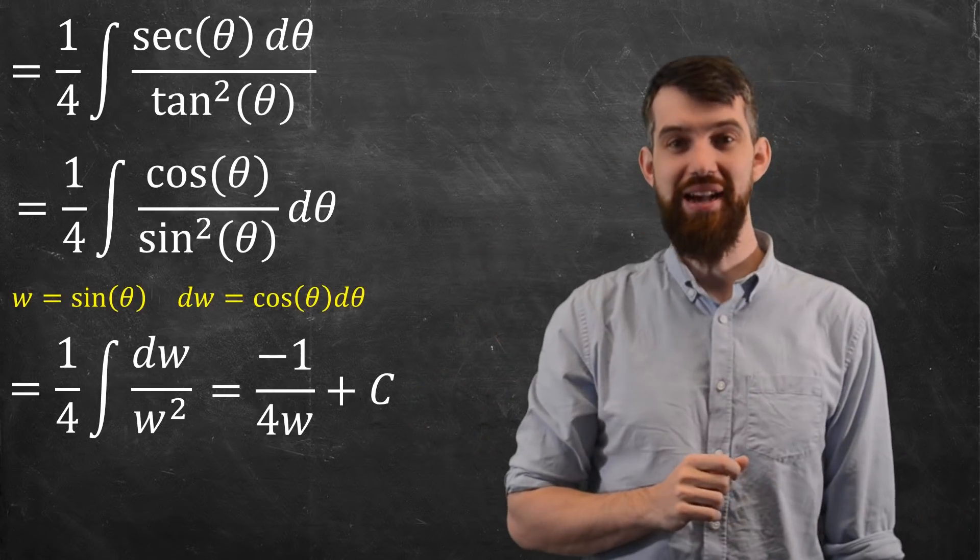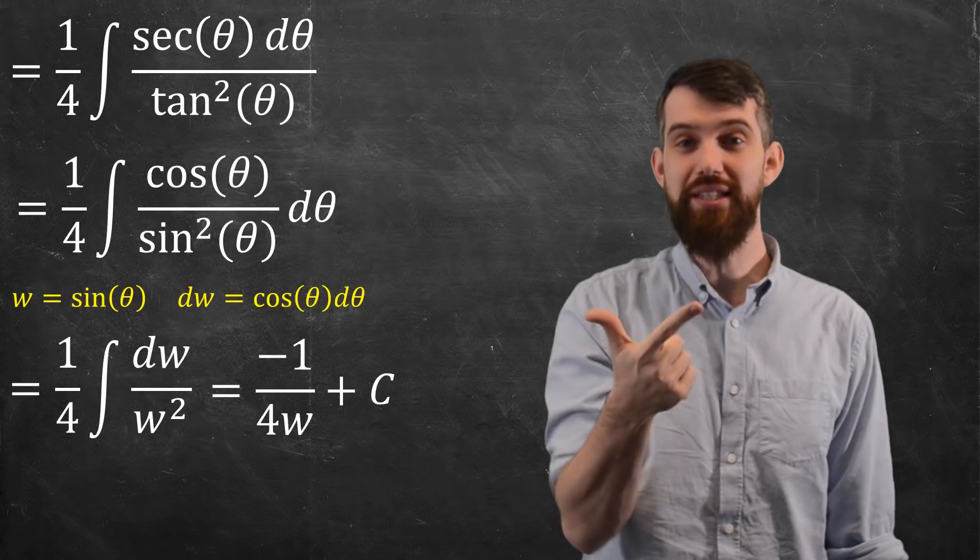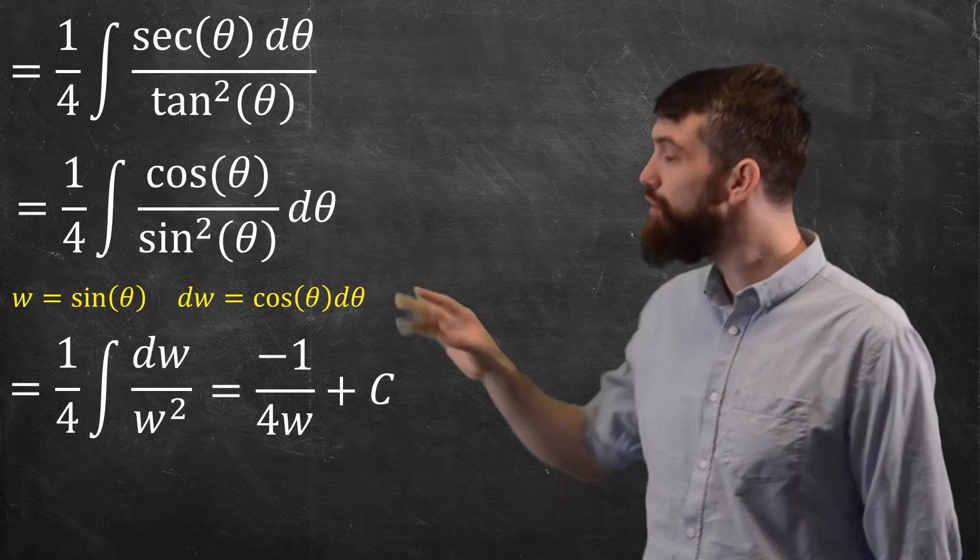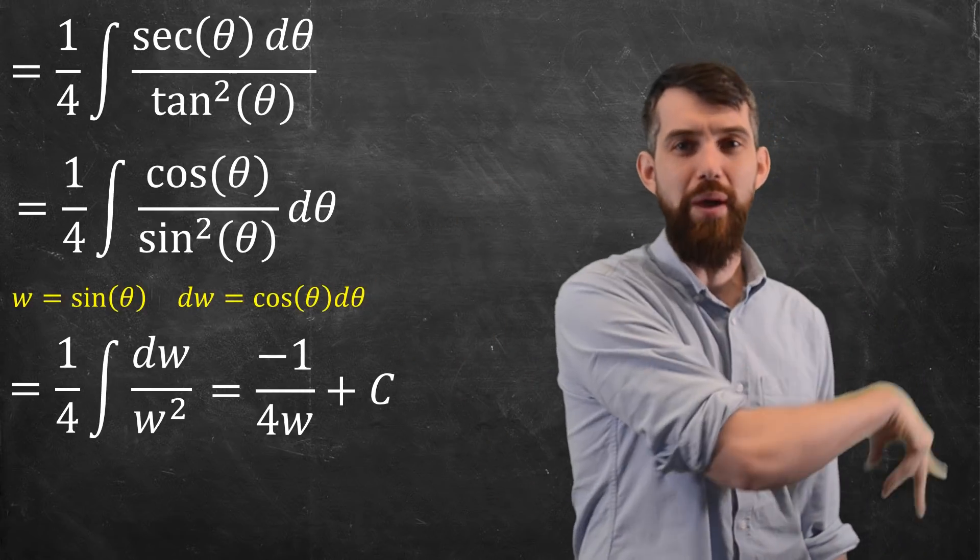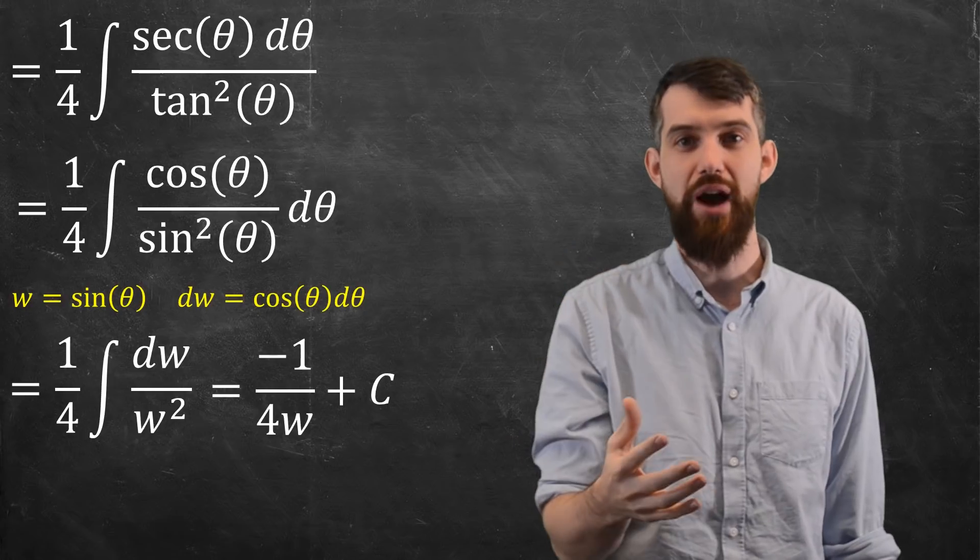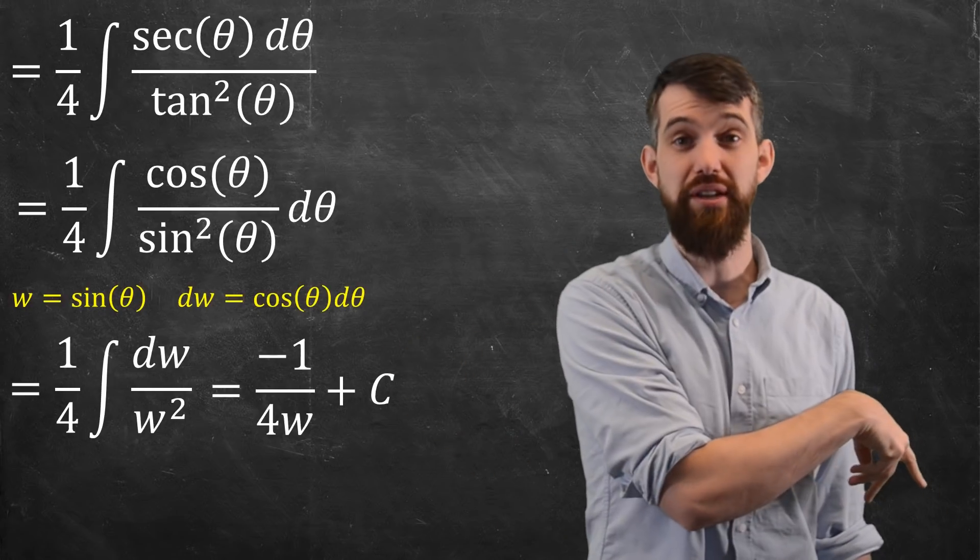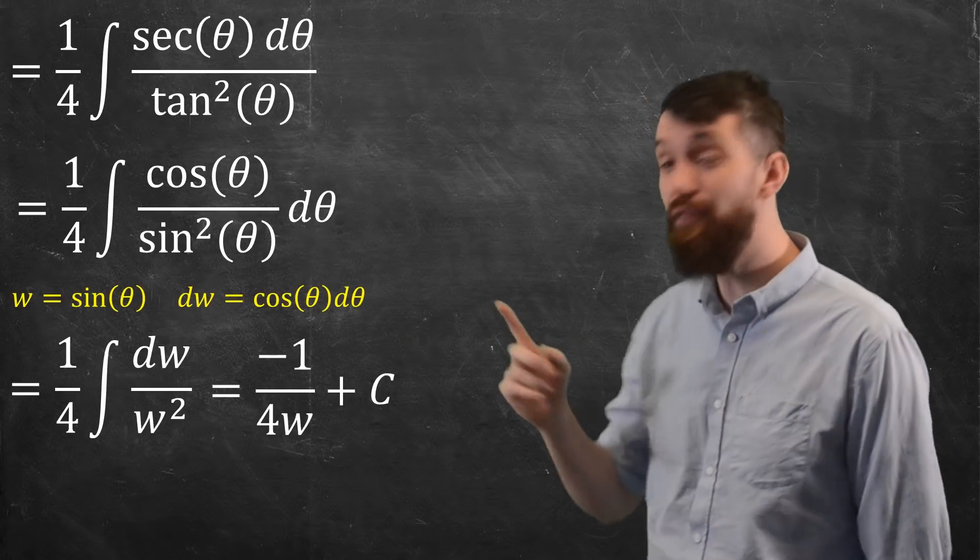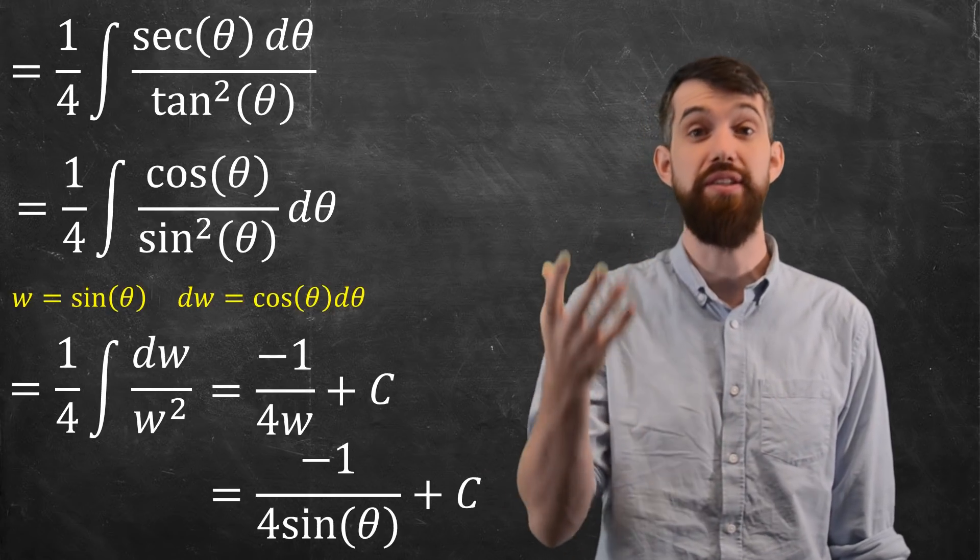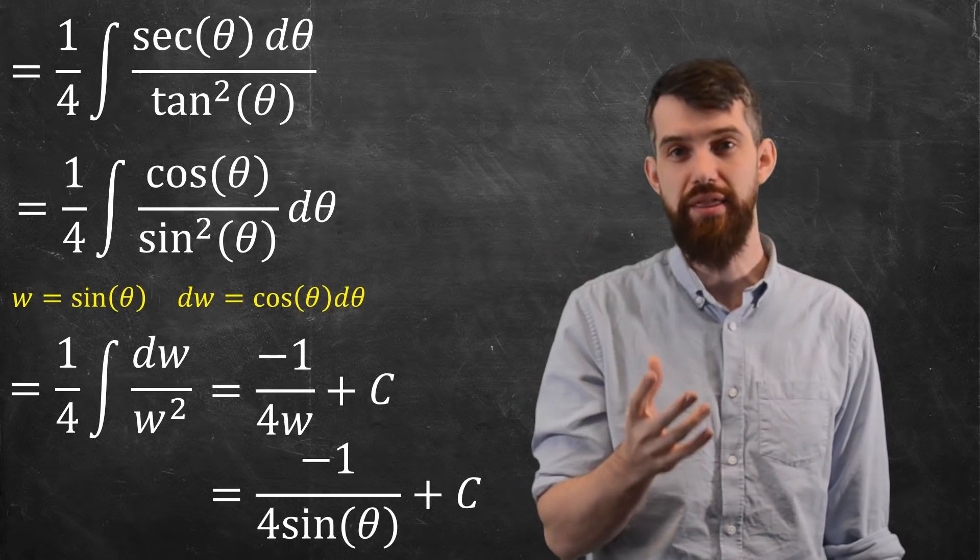Are we done? Sadly, not quite, because I've done a W substitution, I've done a trig substitution, I've done a U substitution. I've done three substitutions, and now I've got it in terms of W. I want to go all the way back to the beginning to get it in terms of x as my original integral was written down in. So I have to undo these three different substitutions. The most recent of them was W, so I've got a W here, and I'm going to rewrite it in terms of θ. This is now minus one-quarter sine θ plus C.